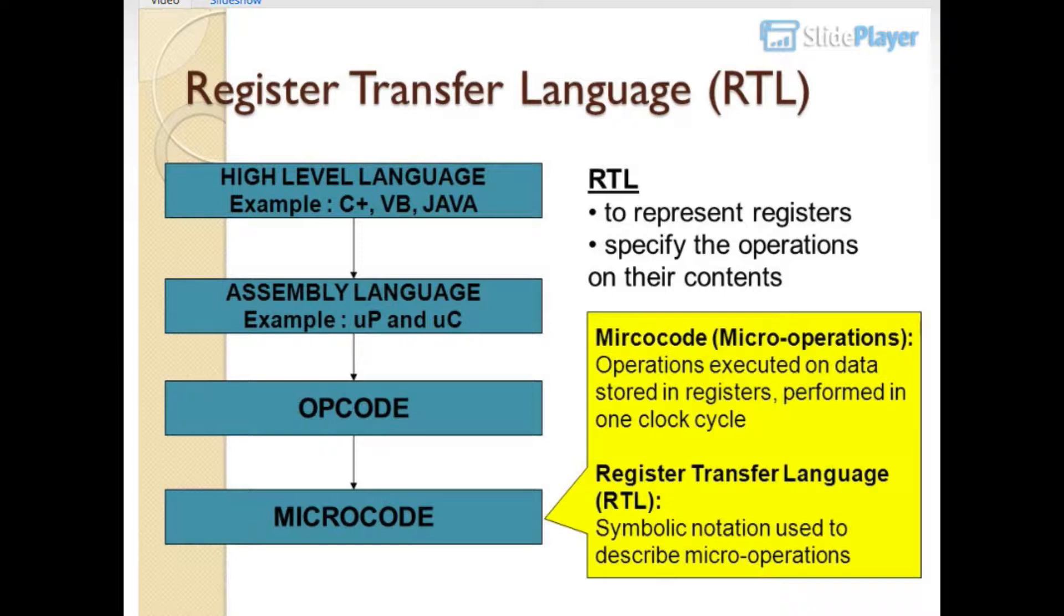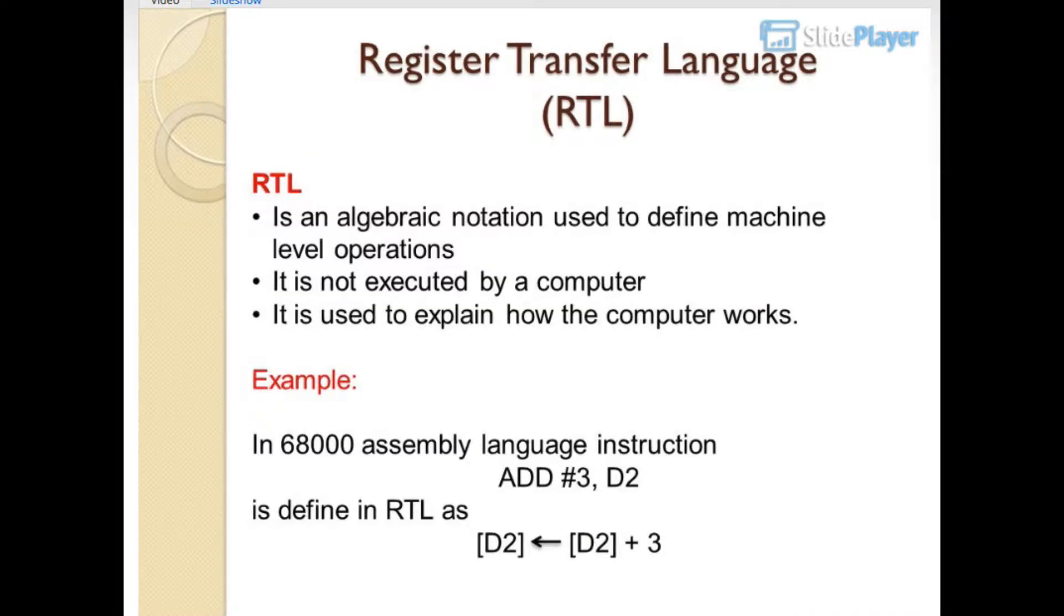Register Transfer Language, RTL, is symbolic notation used to describe micro operations. It is an algebraic notation used to define machine level operations. It is not executed by a computer. It is used to explain how the computer works.